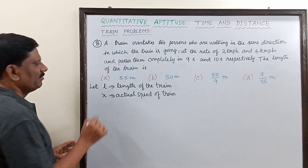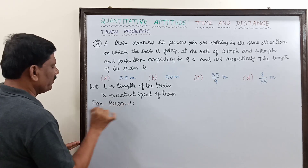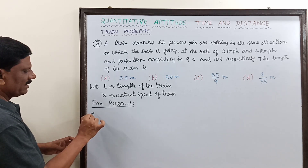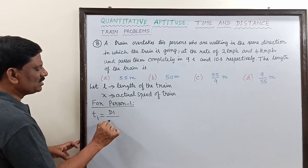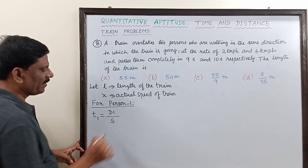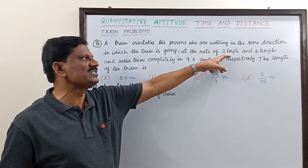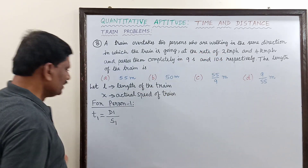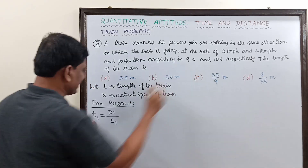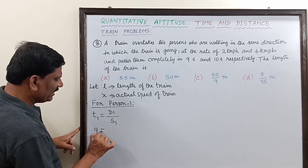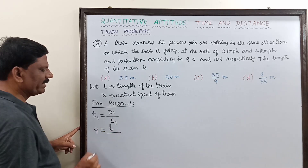For person one, I want to frame one equation. The time taken t1 is equal to distance traveled divided by the relative speed s1. The relative speed means the speed of the train with respect to the first person who is traveling at 2 km/h. t1 is equal to 9 seconds, so the left-hand side becomes 9 seconds and the right-hand side is L divided by the relative speed.